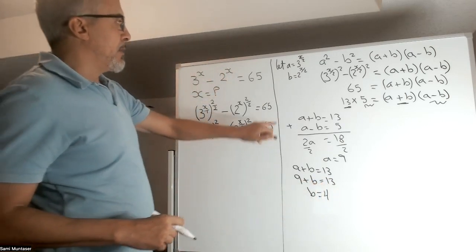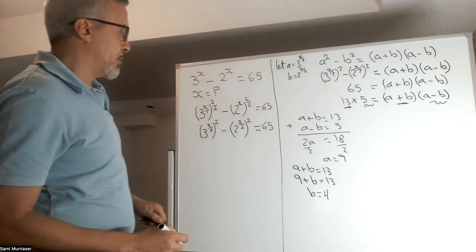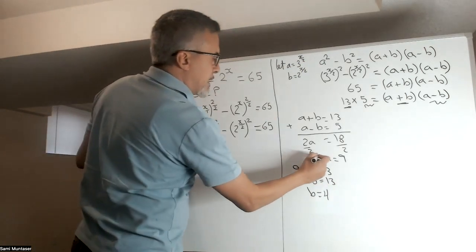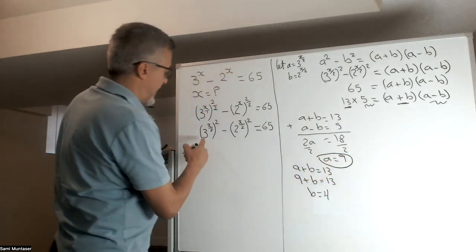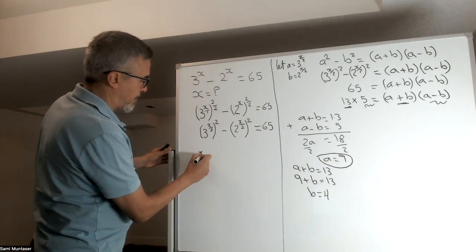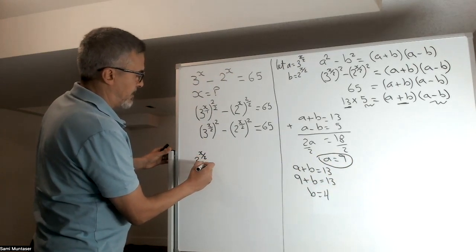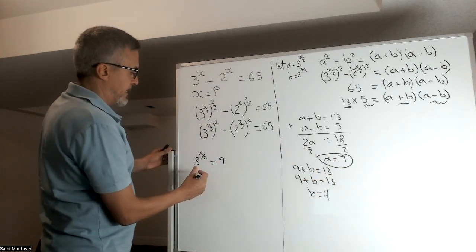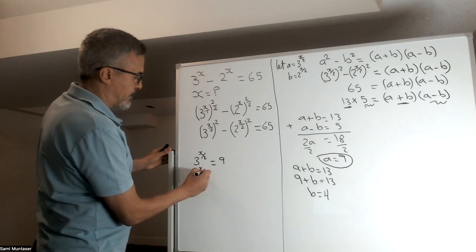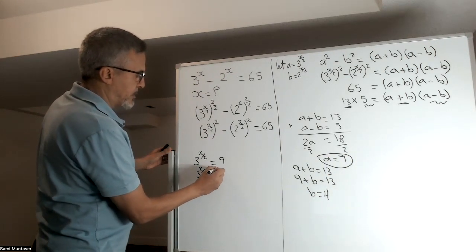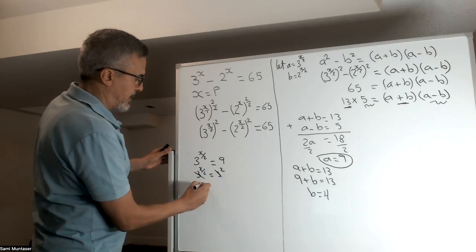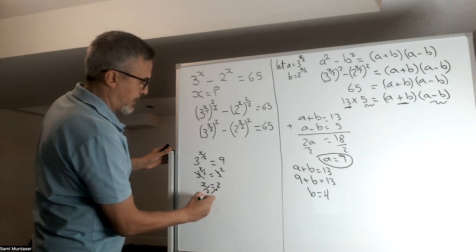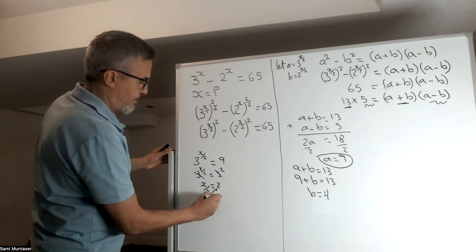Now, as we said earlier, a is the 3 to the power of x over 2. So, let's come back here now, and say that a, which equals 9, and a, since a is 3 to the power of x over 2, that should equal 9, because that's what they say. a equals 9, and a is this. Now, 3 to the power of x over 2 equals 3 squared. Now, the 3's cancel, and then we get x over 2 equals 2. Cross multiply the 2 there, and you get x equals 4.